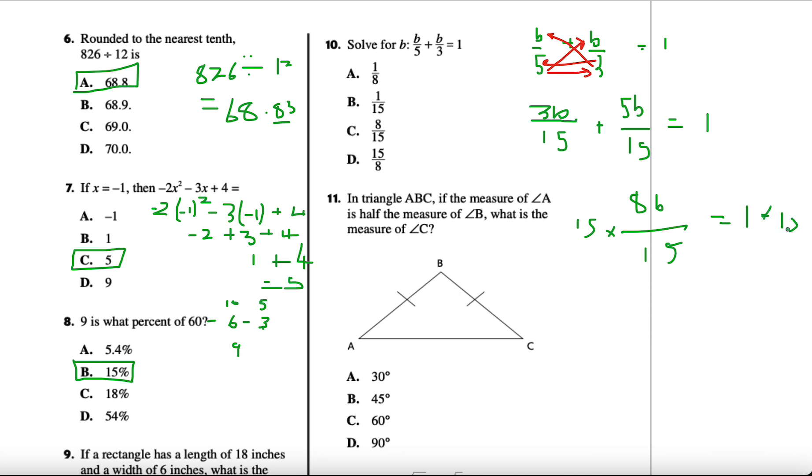We get 8B over 15 equals 1. We can get rid of this 15 by multiplying both sides by 15, so we get 8B equals 15. To solve for B, we divide both sides by 8 and get B equals 15 over 8. So D is the answer for this one.